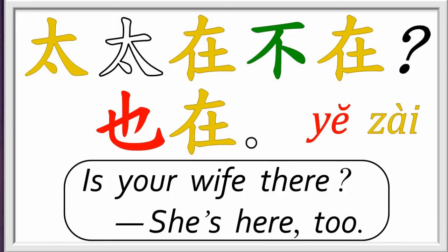For example, a modern Chinese question and answer could be: 'Is your wife there?' 'She's here too.' Tàitai, zài bu zài? Yě zài. Remember that pronouns are often understood in conversation.